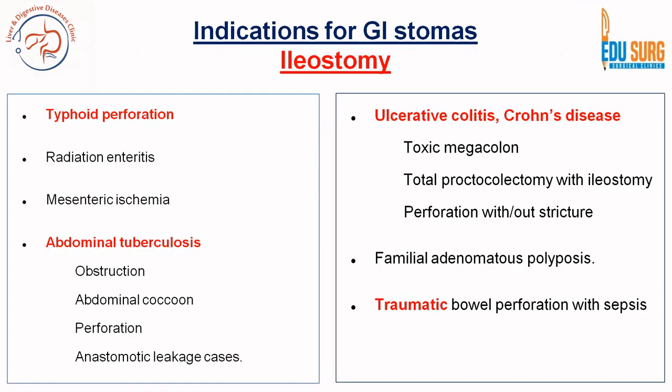Now if we look at the table usually seen in textbooks, you can see that most of these cases we have discussed are routinely seen in our clinics. If you diagnose these cases and plan their treatment, you will naturally come to know what kind of stoma you are going to use. There is no need to memorize these tables — if you understand the indications, it is very easy to understand why the table is given in the books and how to answer it in an exam.